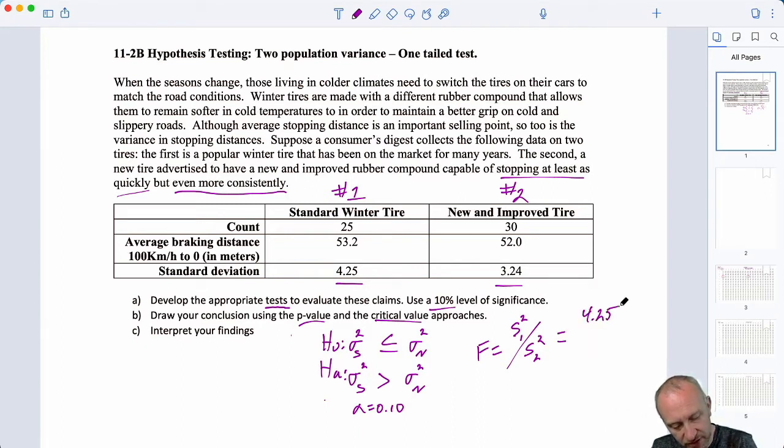So, that's 4.25 squared because, of course, I have a standard deviation. 4.25, 3.24 squared. So, 4.25 over 3.24, both of those squared. This gives me an F-statistic of 1.72.